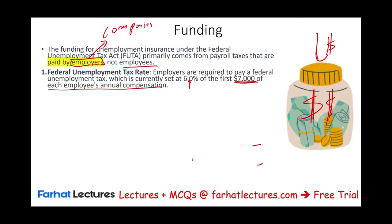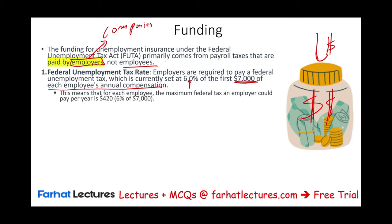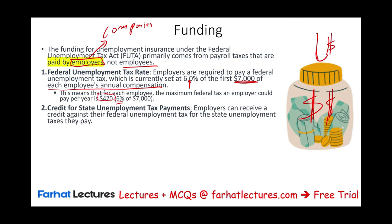If you look at the Federal Unemployment Form — which is Form 940 — the rate is 6%. This means the maximum federal tax an employer could pay per employee per year is $420. However, employers don't really pay the full 6%, because the state gives them a credit. The employer will get a credit for state unemployment tax paid.